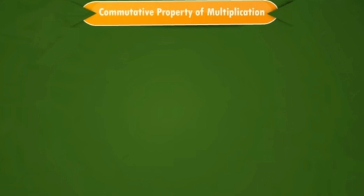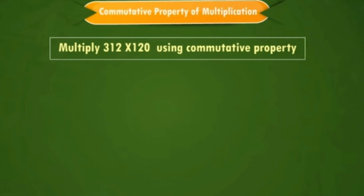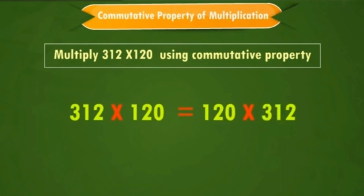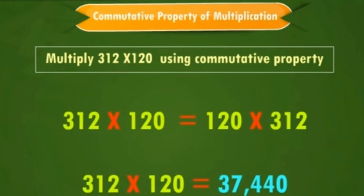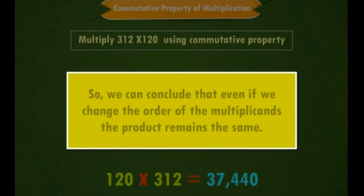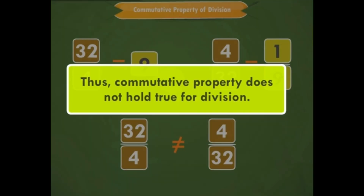Commutative property of multiplication: if we multiply any two whole numbers, the product is always the same irrespective of the order of the factors. For example, 312 × 120 should equal 120 × 312. Indeed, 312 × 120 = 37,440 and 120 × 312 = 37,440. So even if we change the order of the multiplicands, the product remains the same. This commutative property also does not hold for division or subtraction.